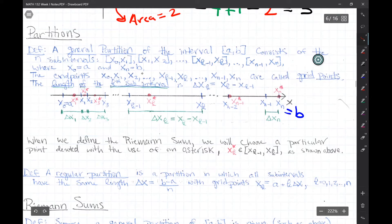The endpoints of each of these sub-intervals that we break up our big interval into, those are called the grid points. So here x0 is a grid point, x1 is a grid point, x2 is a grid point, and on and on.